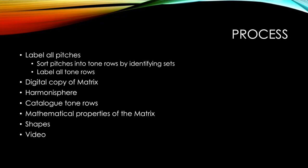As I worked to accomplish my project, there were quite a lot of steps between analyzing the piece and creating the geometric interpretation. First, I had to label all the pitches and sort them into the tone rows by identifying the sets. Then I had to label all these tone rows, create a digital copy of the matrix, and create my own harmonosphere upon which to build my shapes. Additionally, I had to catalog the tone rows, and I even spent some time exploring the mathematical properties of the matrix before creating the shapes which accompany my video. All in all, while it was fun, it was quite an extensive process.